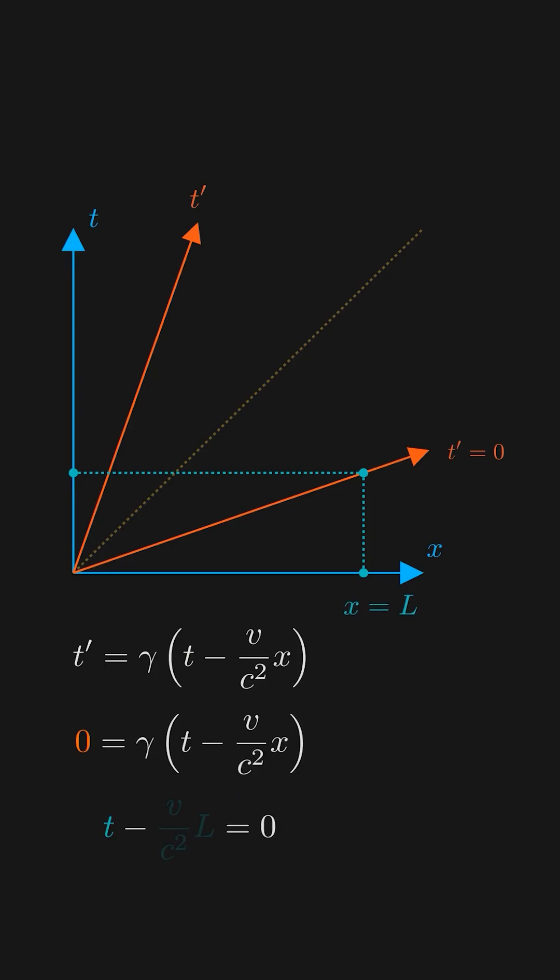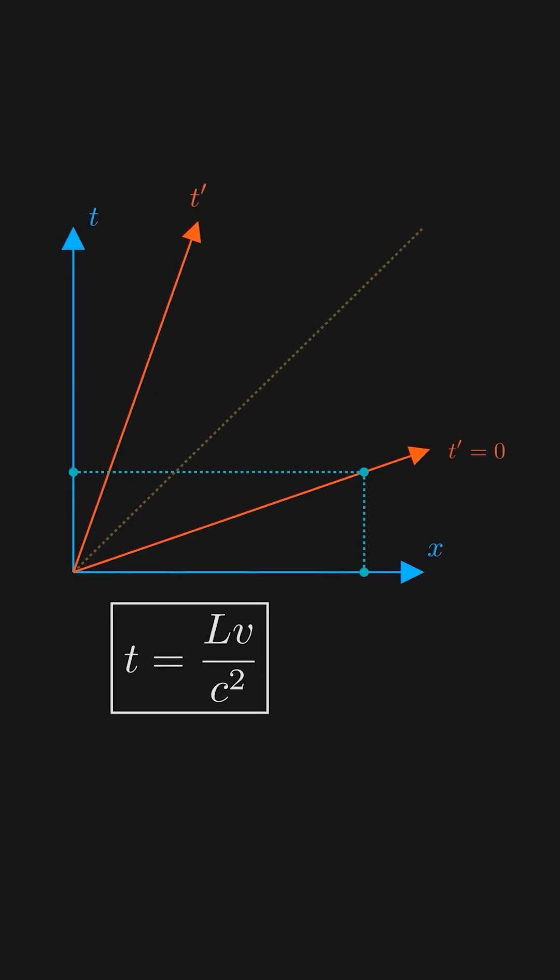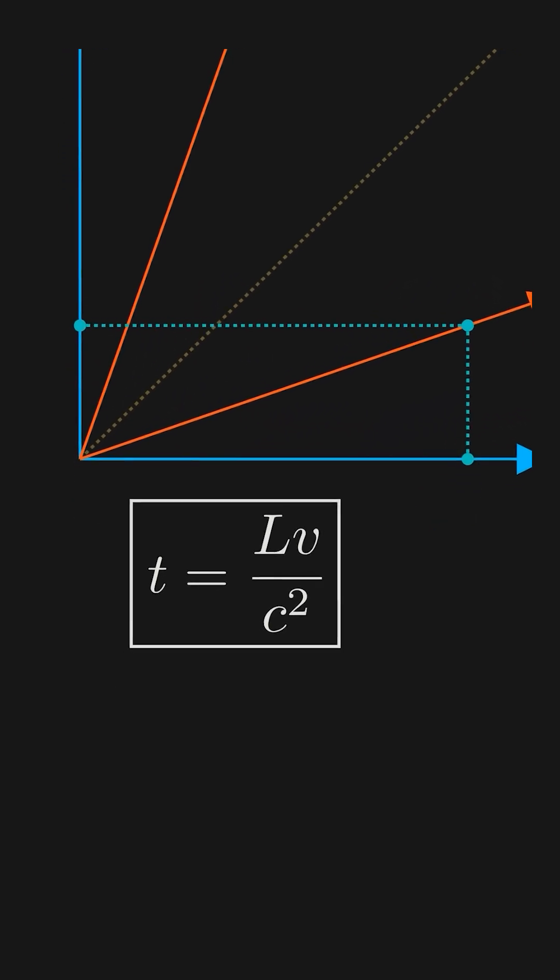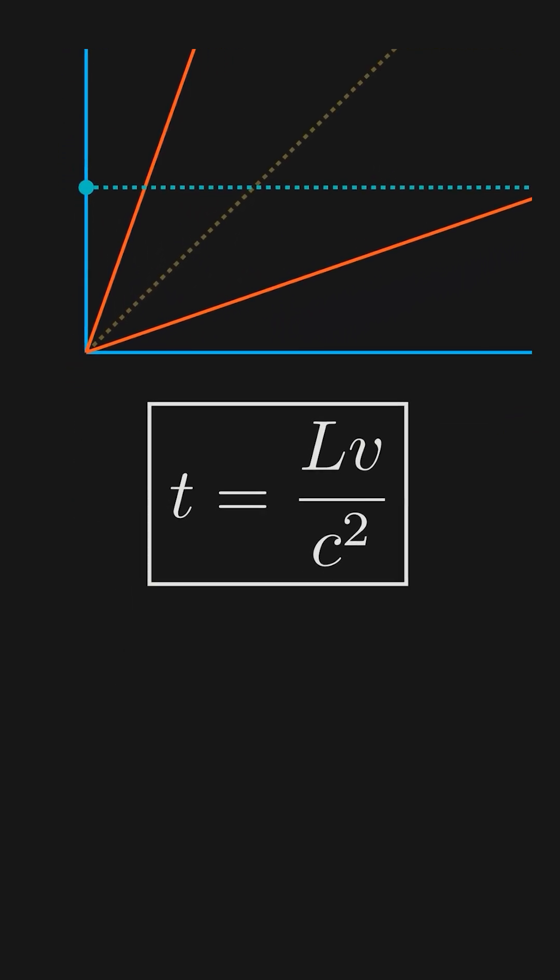We just cancel the gamma, and we can plug in the x equals l, and in the end we simply get t is equal to Lv over c squared. This is a very general formula for how much delay there is between simultaneous events, with respect to how far apart they are.